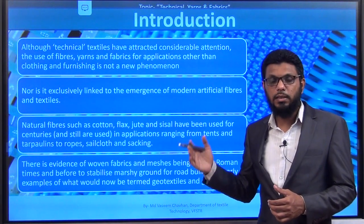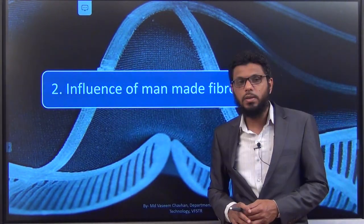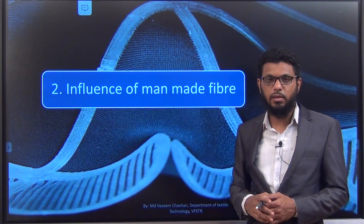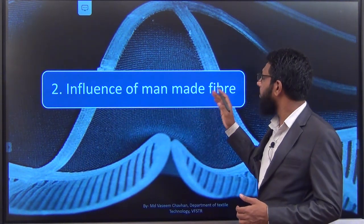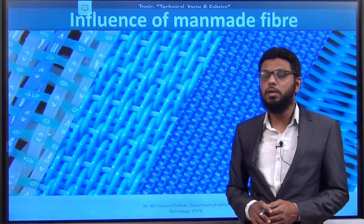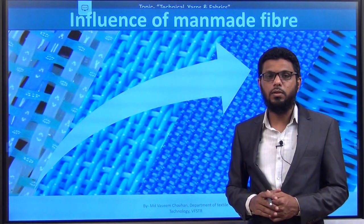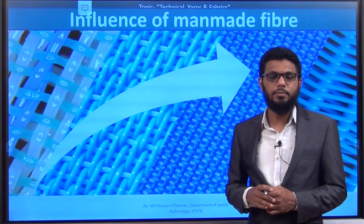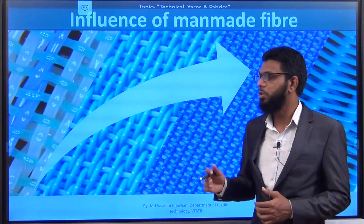Now let's look at the second subtopic: the influence of man-made fibers. We discussed in the last slide about natural fibers and how they have been used. Now we will see what the influence of man-made fiber is on technical textiles. Before the 1950s there were no synthetic or man-made fibers — only natural fibers were used, and they had some limitations because of their properties, so their technical applications were not explored that much.